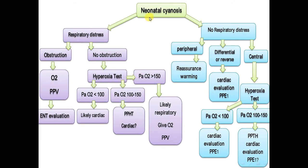How to approach neonatal cyanosis in the delivery room. First, assess: is there respiratory distress? If yes, and there is obstruction, give the patient O2 and positive pressure ventilation, and the patient needs ENT evaluation. If there is no obstruction, give the hyperoxia test. If PaO2 is less than 100, the cause is most likely cardiac. If it is between 100 and 150, it is persistent pulmonary hypertension or cardiac. If it is more than 150, it is most likely respiratory — give O2 and positive pressure ventilation.